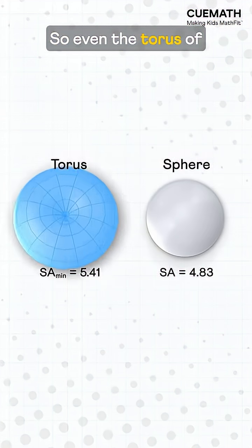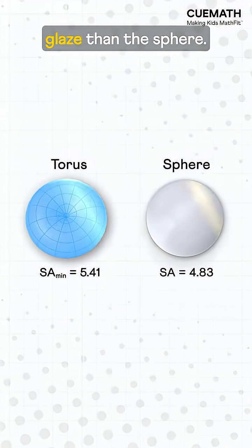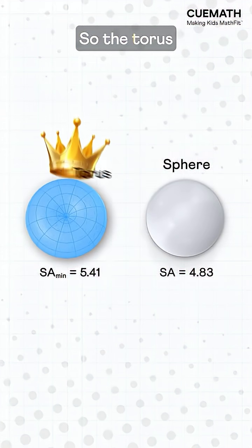So even the torus of the smallest surface area has more glaze than the sphere. The torus always wins.